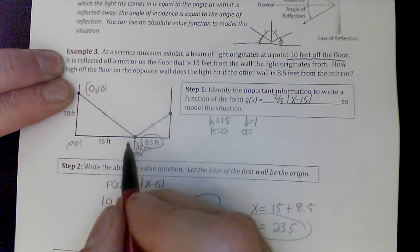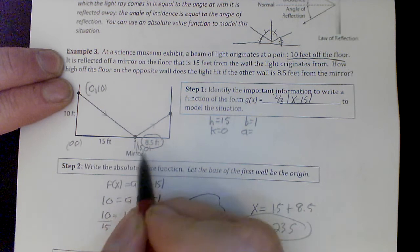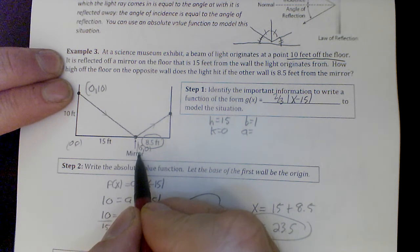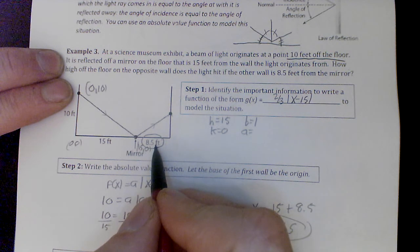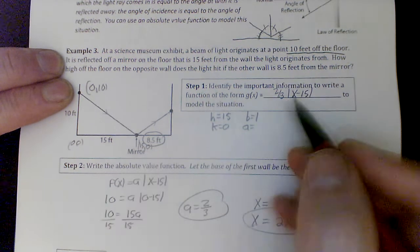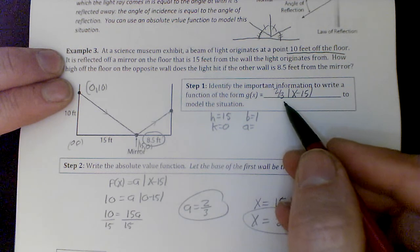15 feet on the ground away from the wall, so that's (15, 0) - x value 15, y is 0. And it wants to know how high off the floor does it hit the opposite wall that's 8.5 feet from the mirror. So we're going to go for it. I already got the answer here, but let's see how we got the answer.